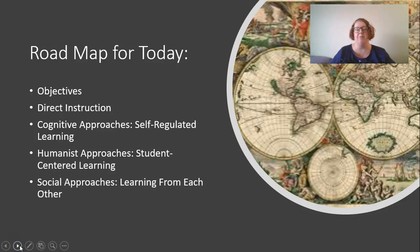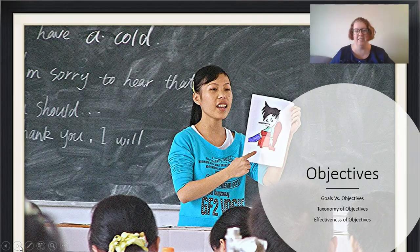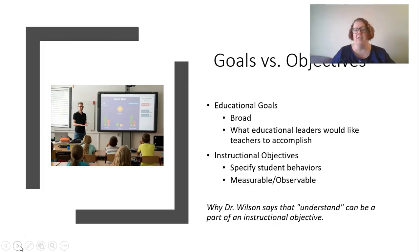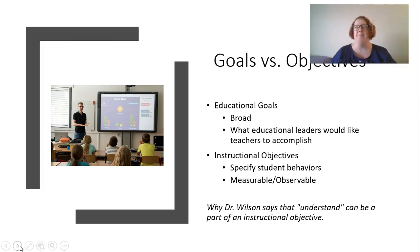We're going to talk about objectives and then we'll talk about four different approaches: direct, cognitive, humanist, and social approaches. So objectives first — objectives versus goals. Educational goals tend to be set by educational leaders about what they'd like teachers to accomplish and they tend to be fairly broad. Instructional objectives, on the other hand, tend to be very specific about a typical lesson rather than a unit, and they specify student behaviors — they are measurable and observable. You'll get a lot of instruction on how to write objectives when you start taking your methods classes.